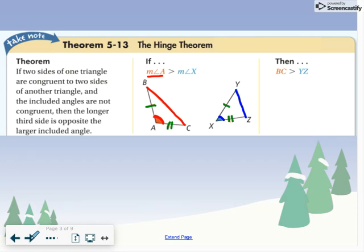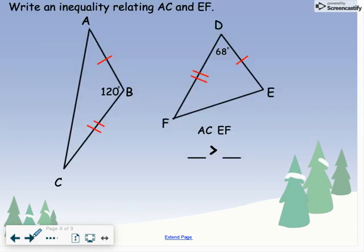So let's use that here. We have two triangles here. They have two congruent sides and then an included angle. We notice angle B is 120 degrees, angle D is 68 degrees. So what we're trying to do is compare the sides across from them - which one's going to be larger? We're dealing with AC and EF. Hopefully you realize since AC is across from our larger angle, it's going to be bigger than EF.